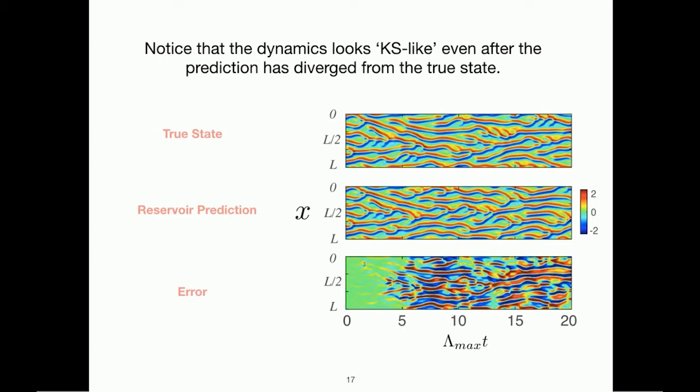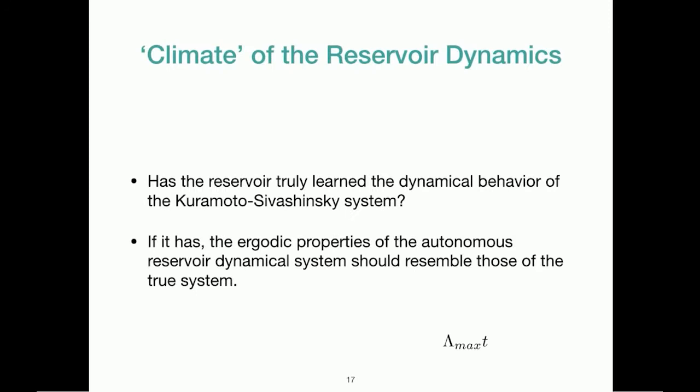Now, I'll point out that no matter how good your model is of a chaotic system, the predictions are always going to diverge from the true state. That's just a fundamental property of chaotic systems because of exponential growth of errors. But you'll notice in this picture that the dynamics of the reservoir prediction looks very KS-like even after the prediction has diverged from the true state.